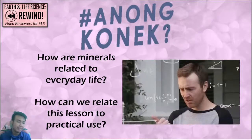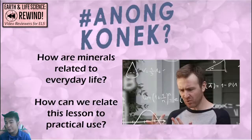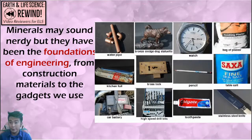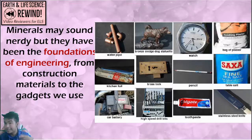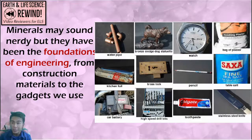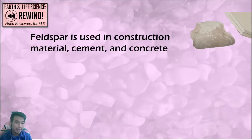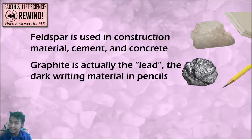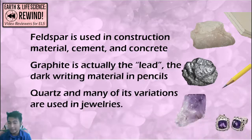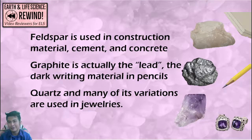How do we relate minerals to everyday life? Minerals have been the foundation of engineering. Construction pipes, concrete, metals from bikes, and canned goods all use minerals. Metals are processed from minerals. Batteries use minerals. Watches and clocks use quartz, which is a mineral. Feldspar is used in cement and concrete. Graphite is usually the lead in pencils, and it's a mineral. Quartz and its variations — amethyst, jade — are used as jewelry.